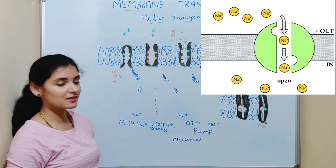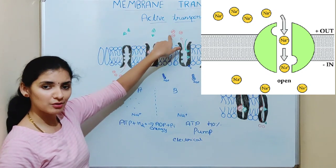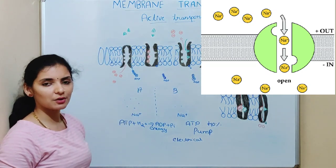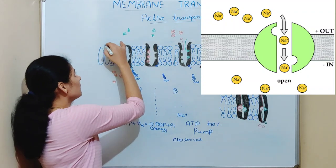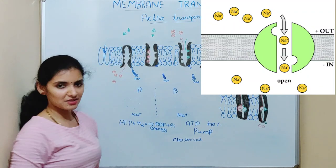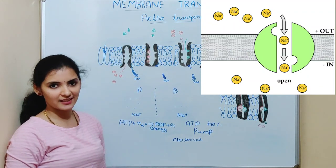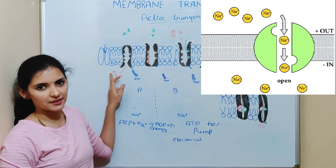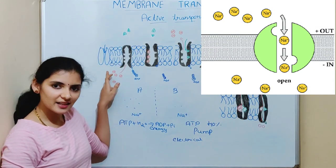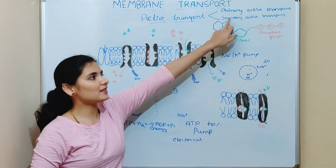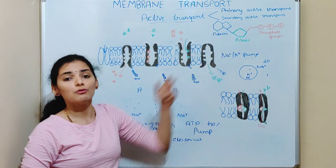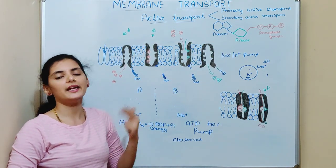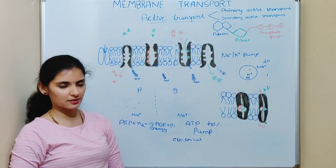Obviously, sodium ions will move from a region of high concentration to low concentration — that is, down their concentration gradient — and during this, energy is released. This energy is used by secondary active transport for the movement of other molecules against the concentration gradient.